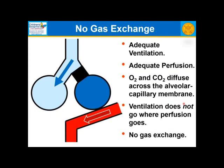Here's an example. Assume we have adequate ventilation — 5 liters per minute at rest — and adequate cardiac output or perfusion — 5 liters per minute at rest — and adequate diffusion across the alveolar capillary membrane. But in this example, none of the ventilation goes where the blood flow goes. So even though ventilation and perfusion are both adequate, no gas exchange occurs. This is an extreme example of the problems with abnormal distribution of ventilation.